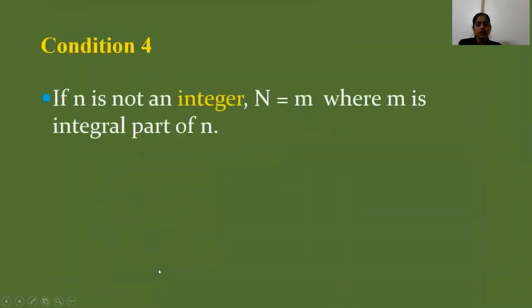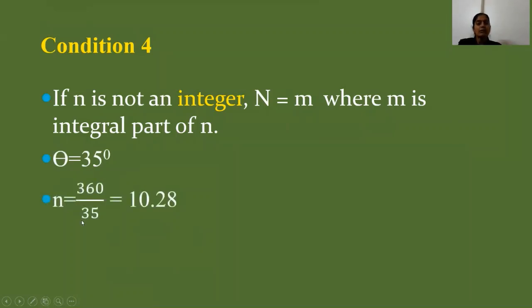Condition four: if n is not an integer, then N equals m, where m is the integral part of n. For example, if theta equals 35 degrees, then n equals 360 divided by 35 equals 10.28. So the number of images is 10, taking only the integer part.